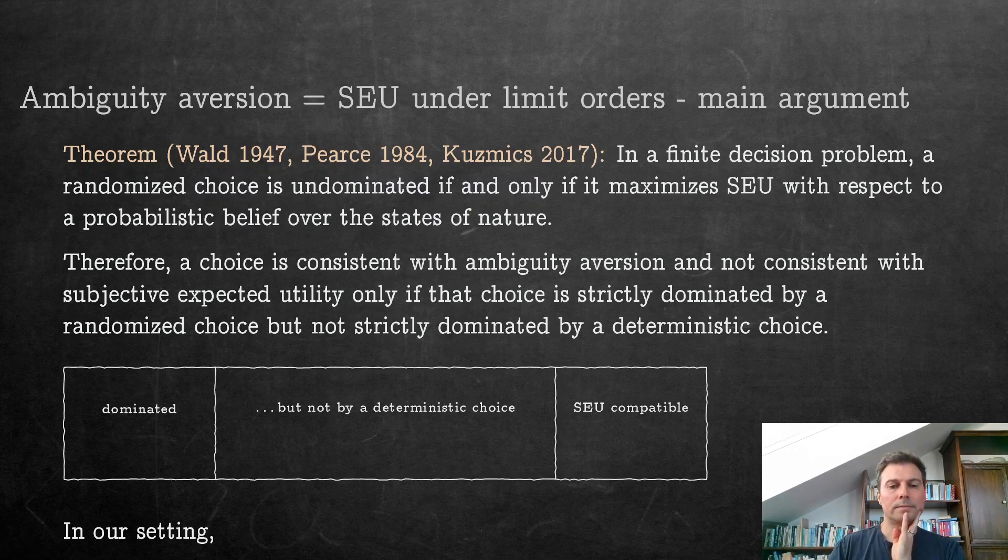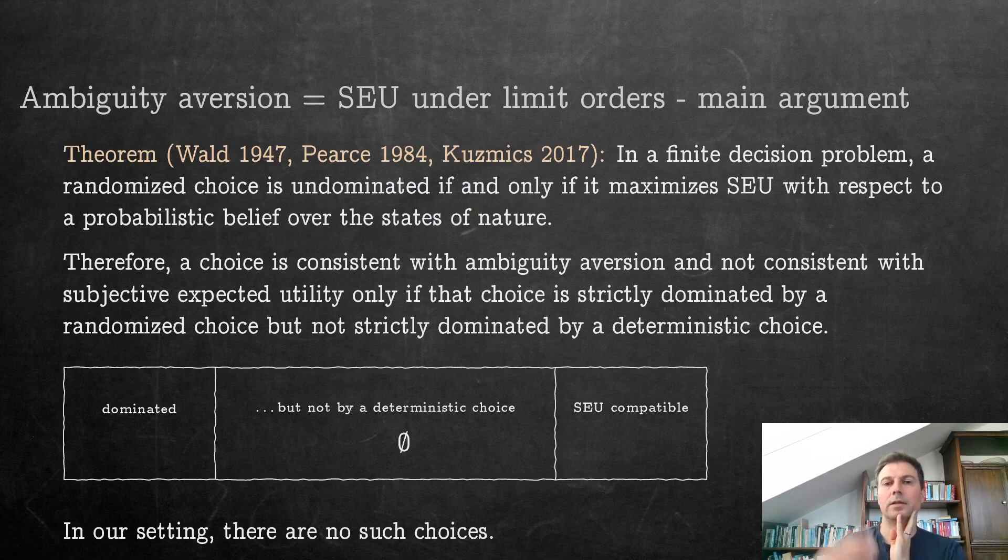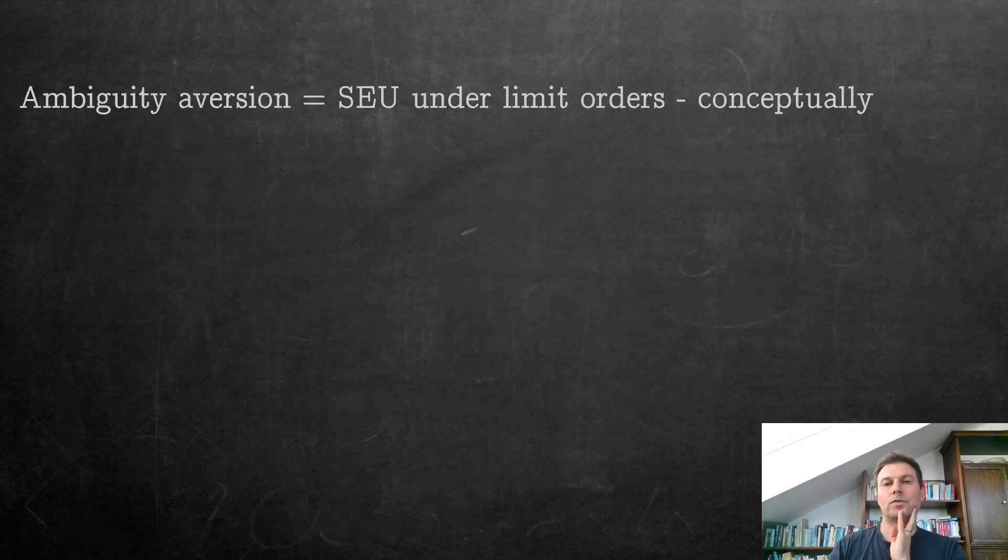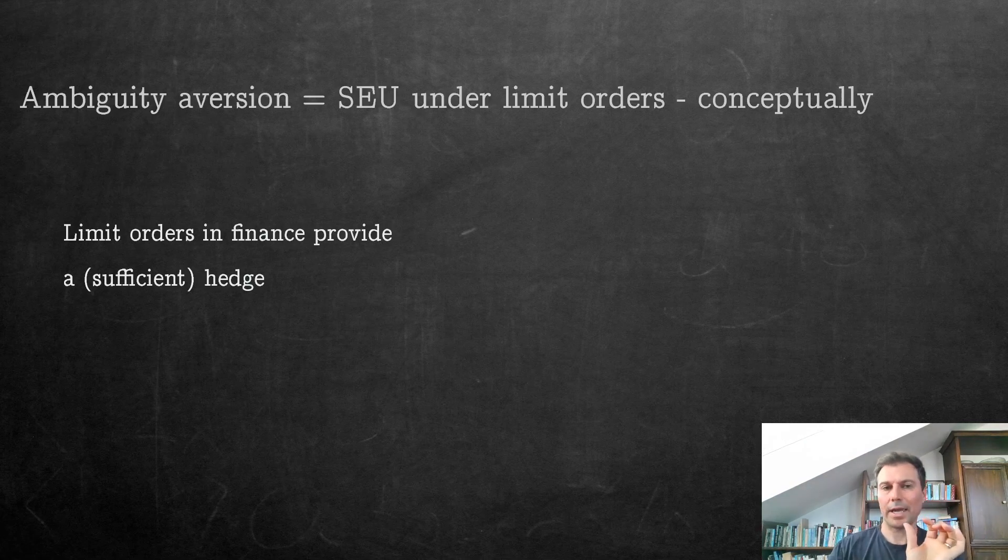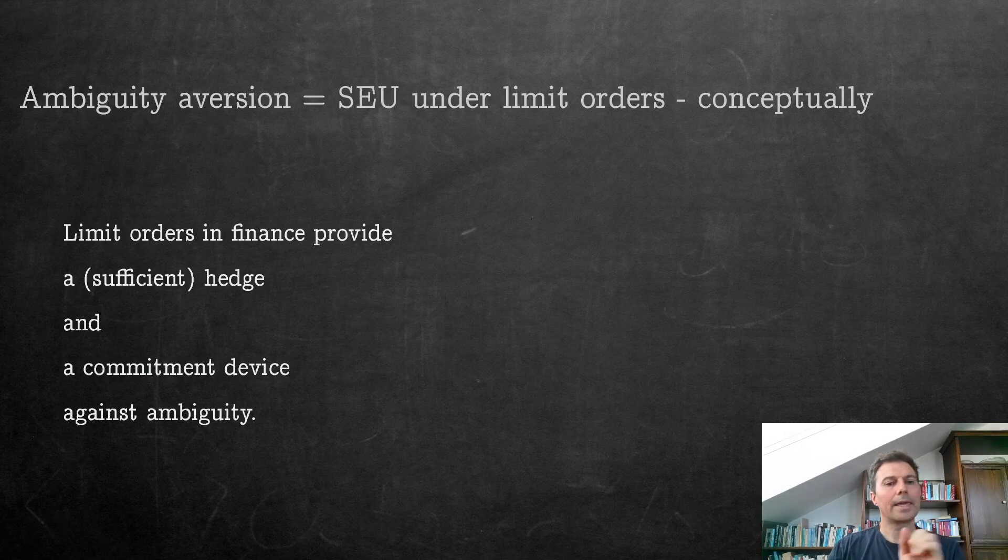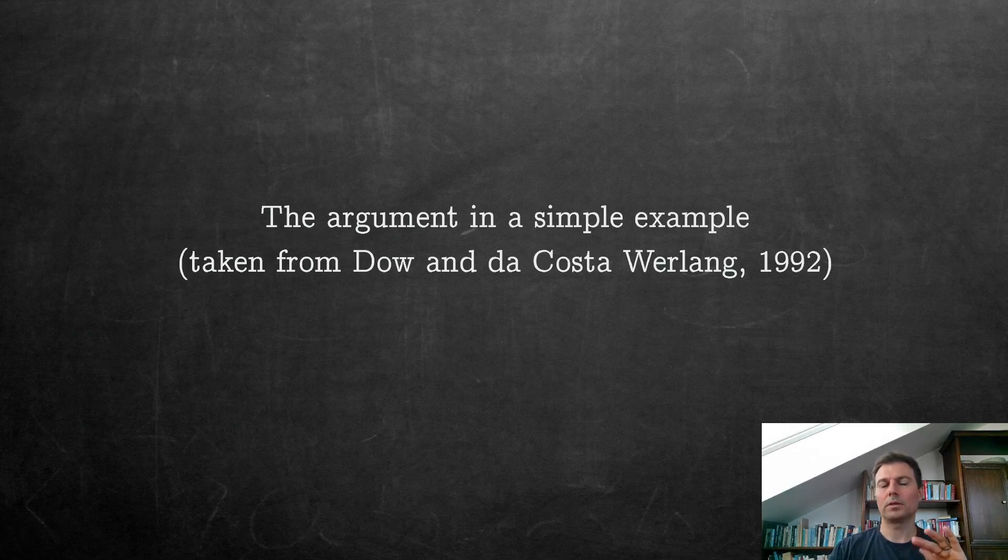In our setting, however, that's the punchline: there are no such choices, we just don't have any, if you have limit orders. So saying this differently, maybe more conceptually, limit orders in finance provide a sufficient hedge, or you can also call it a commitment device, against ambiguity. That's the key takeaway, and now I'm going to explain the argument in a simple example. The example is taken from Dow and Werlang, the argument is ours.